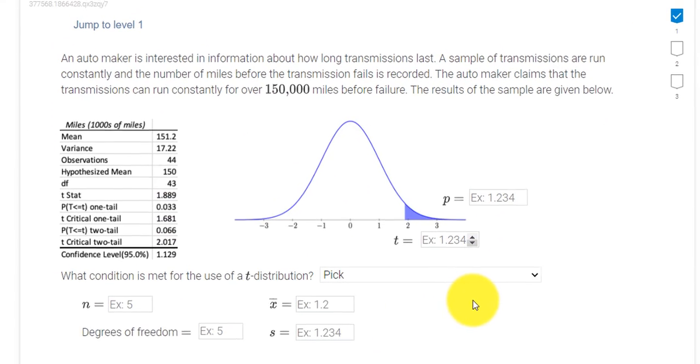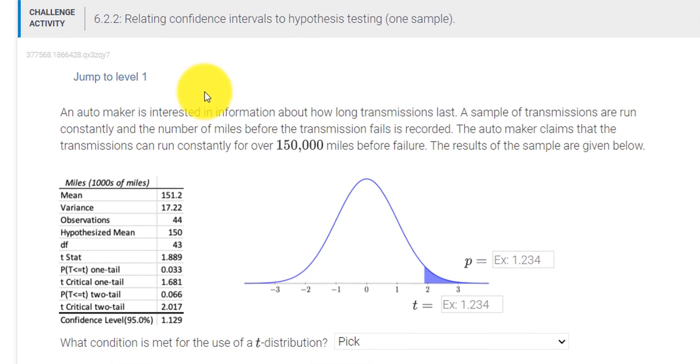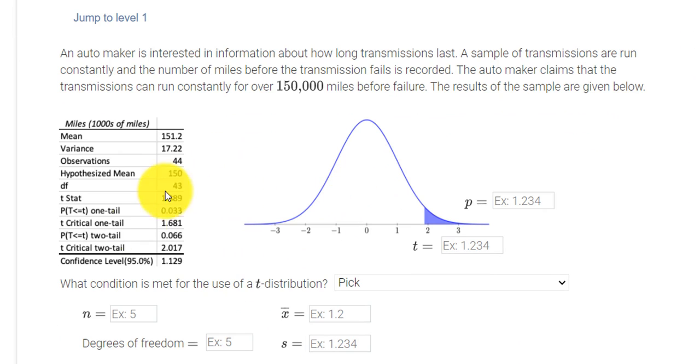And then we could take a look at the next problem. Problem 6.2.2. They gave us a table with a lot of good information here. So it looks like there's a car company and they're testing transmissions. They want to know how long is the transmission in your car last. So this company is going to make a claim. They're saying our transmission is good for 150,000 miles. That would be great. You don't want to replace your transmission any sooner than that.